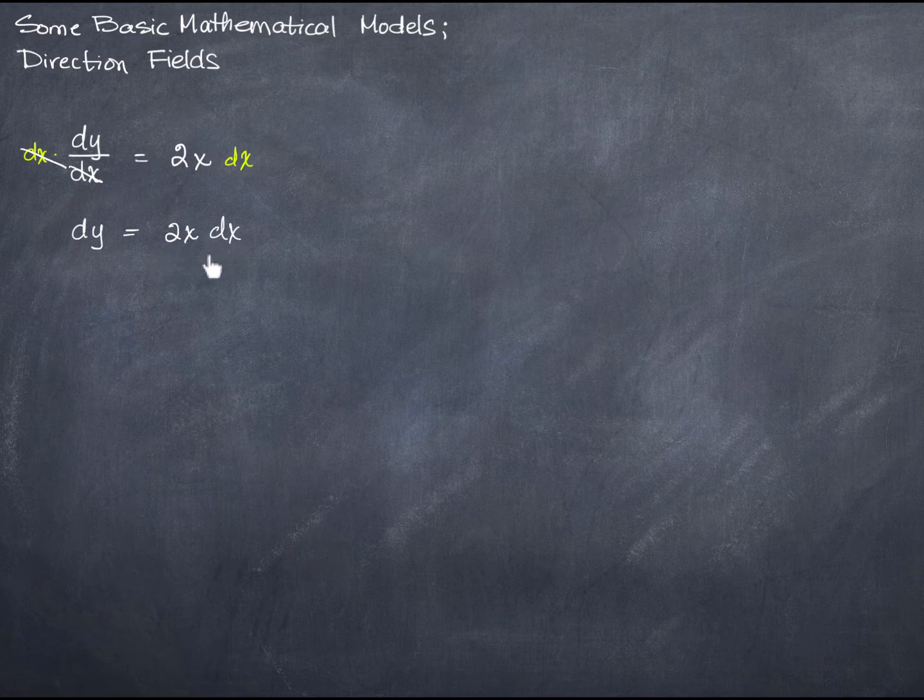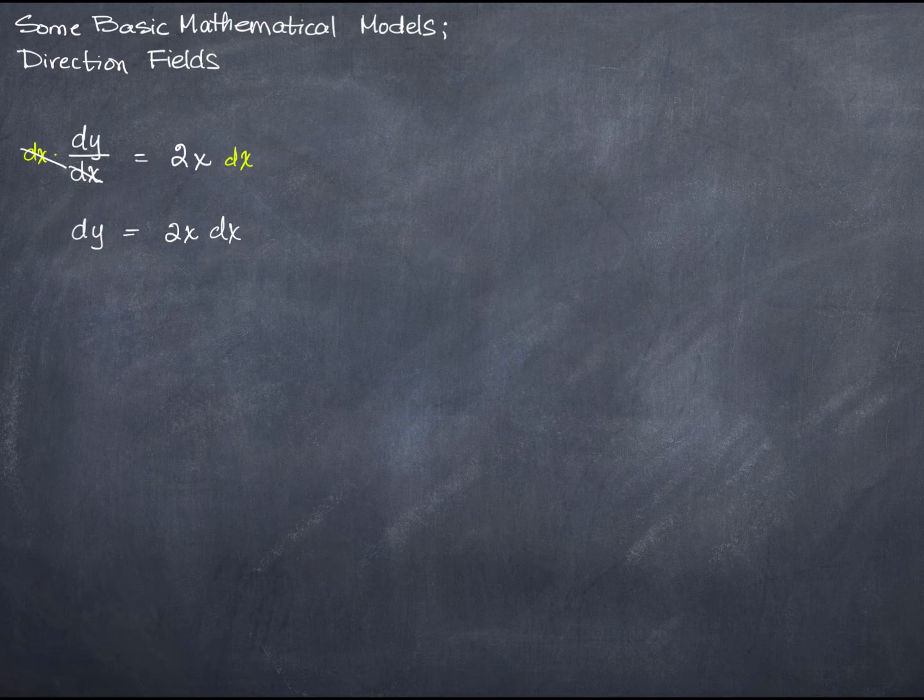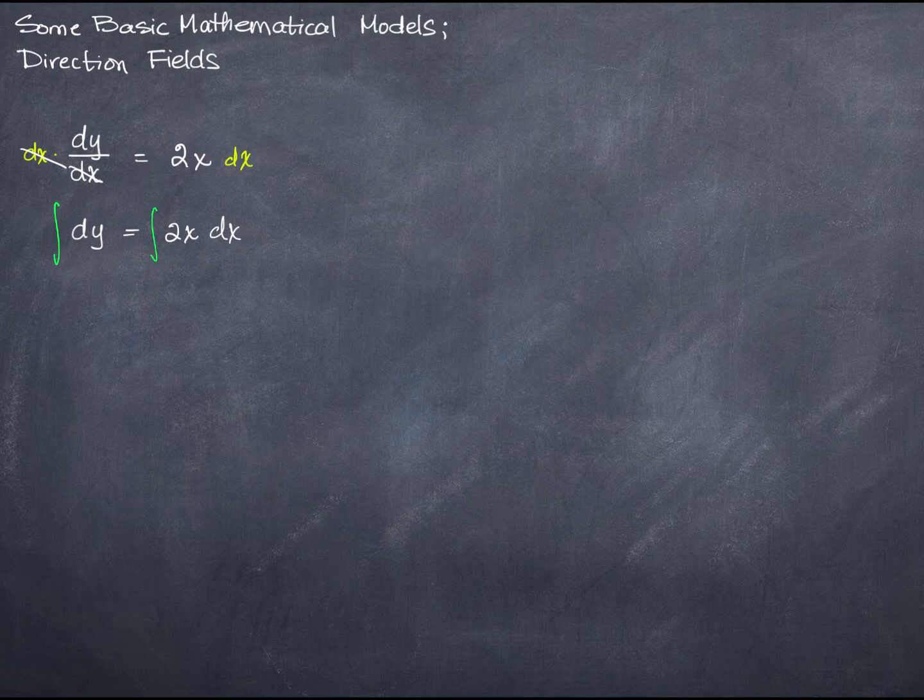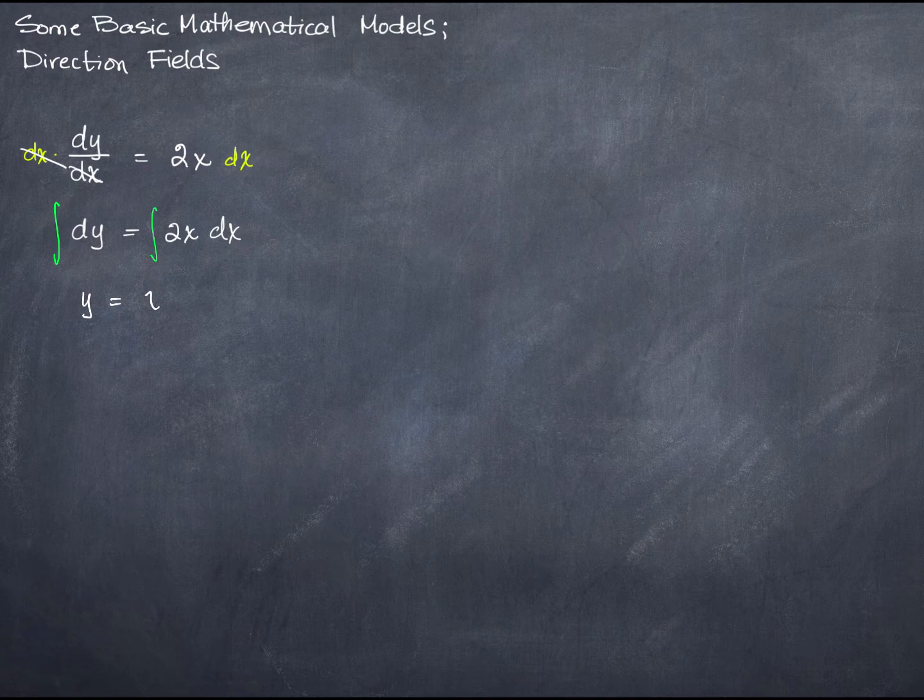To all intents and purposes, this looks like an integral without the integral symbol. So let's add the integral. In the same way as you can take the square root of both sides or take the derivative of both sides of an equation, you can also take the integral of both sides of an equation. This is going to give me y equals x squared plus a constant.